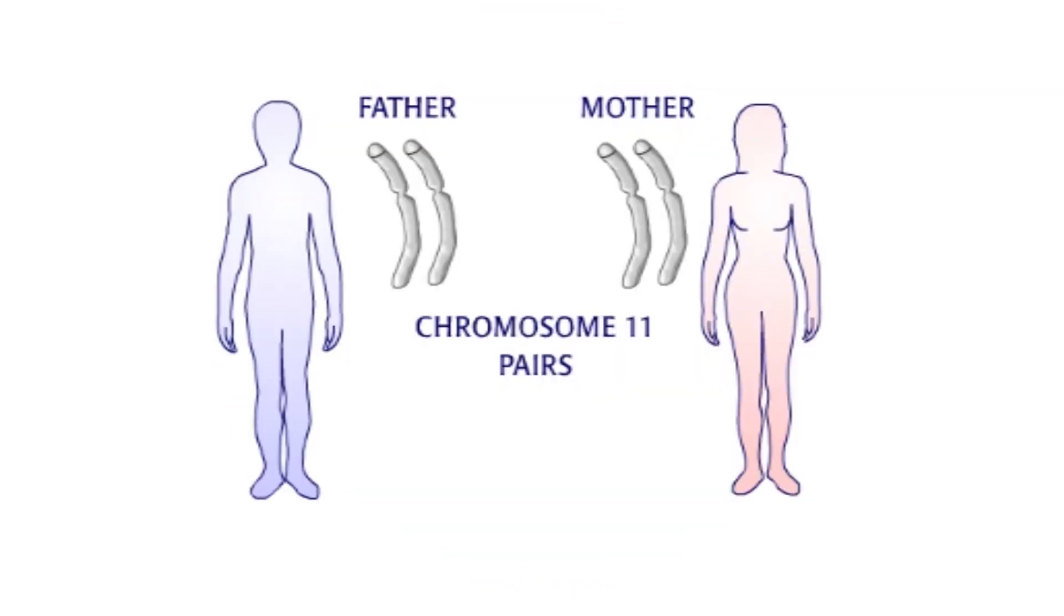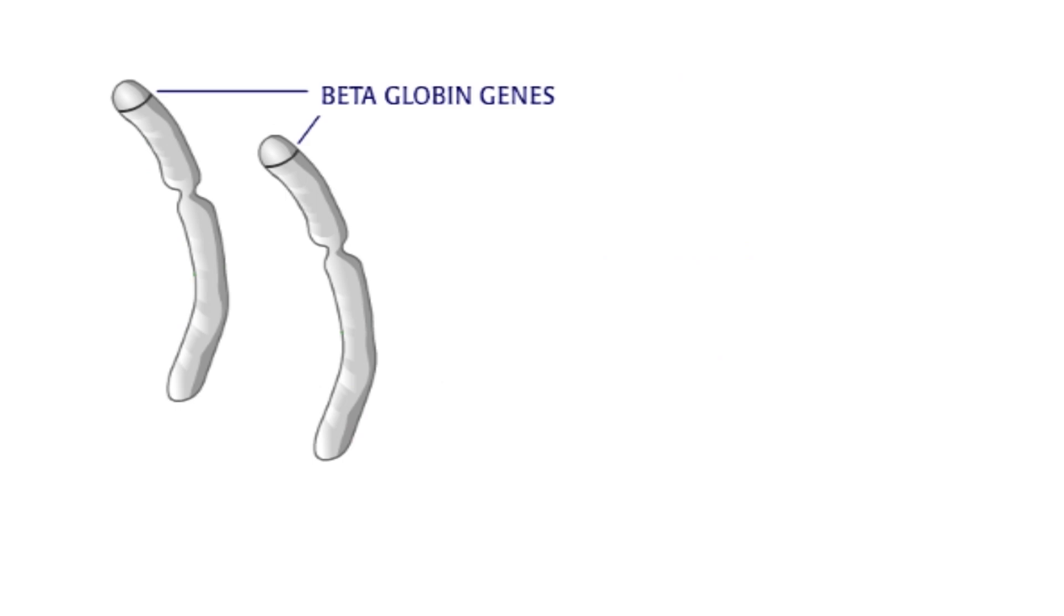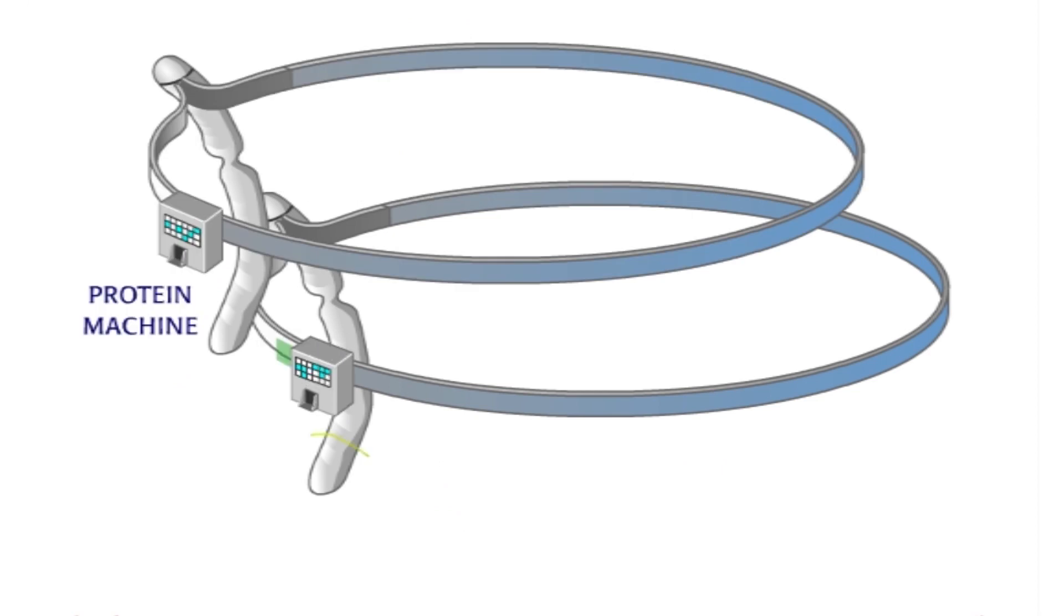The beta globin gene is on chromosome 11. Everyone receives two copies of the beta globin gene from their parents—one from their mother and one from their father. Both of these beta globin genes contain instructions for making the protein.